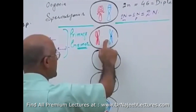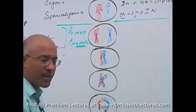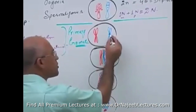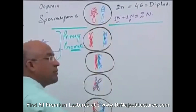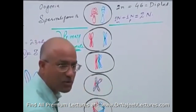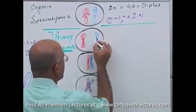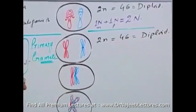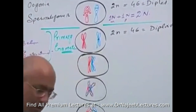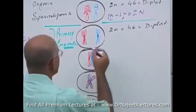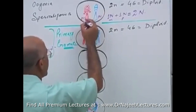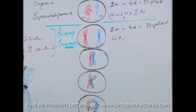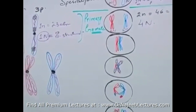This cell converts into the primary gamete after replicating its DNA, so every chromosome — both maternal and paternal — becomes double structured. The number of chromosomes remains the same because the centromere count is unchanged, so 2 small n equals 46, still diploid. But the amount of DNA has been doubled — previously 1N plus 1N, now it has become 2N plus 2N, so the total amount of DNA equals 4 capital N.